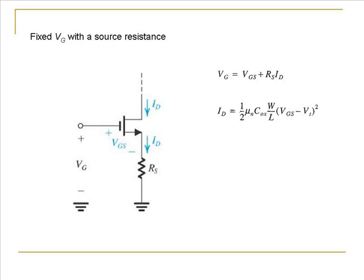The drain current of course can vary depending on the parameters of the MOSFET as we saw before. Now if the drain current increases a little bit for a particular VGS because the gate voltage is constant, VGS would have to reduce for an increased ID. And when VGS reduces the drain current becomes constant. So the source resistance actually starts to act like a feedback resistance here.